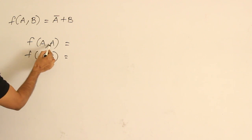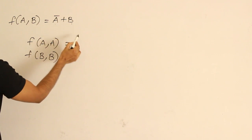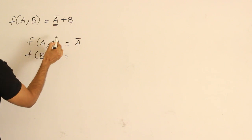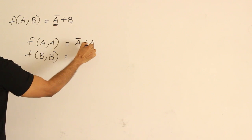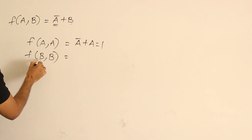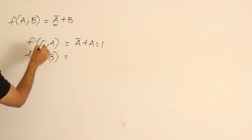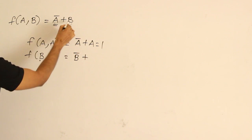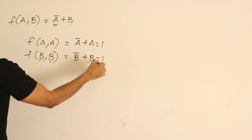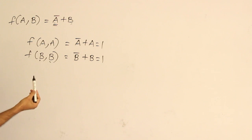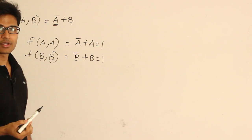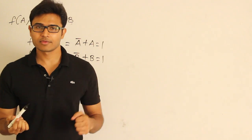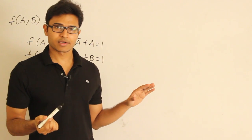Now see: for f(a, a), substituting a for both inputs gives a' + a, which equals 1. Similarly, f(b, b) gives b' + b, which is also 1. So you failed — there is no way of getting rid of one variable and obtaining the complement of the other this way.